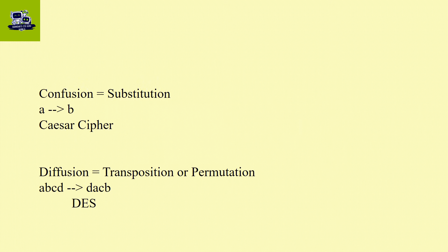Confusion is equivalent to substitution. Diffusion is equivalent to transposition or permutation. What is the difference between Confusion and Diffusion?